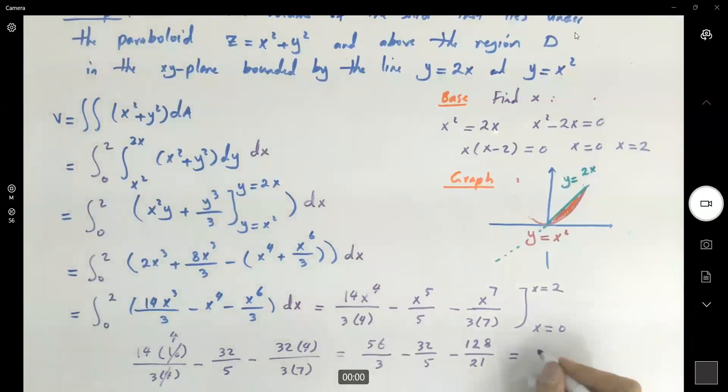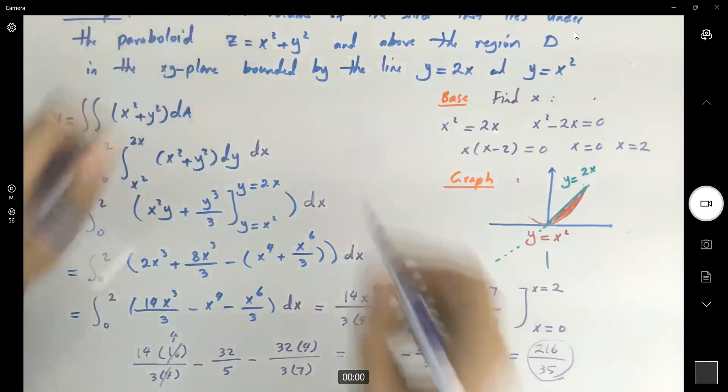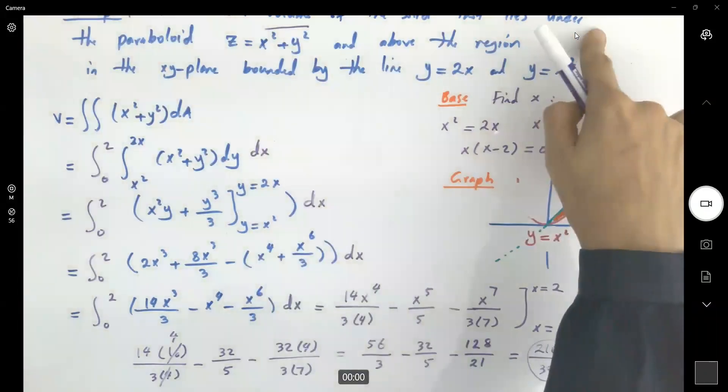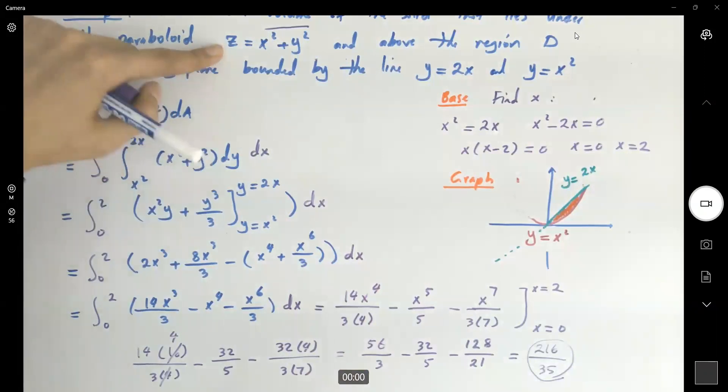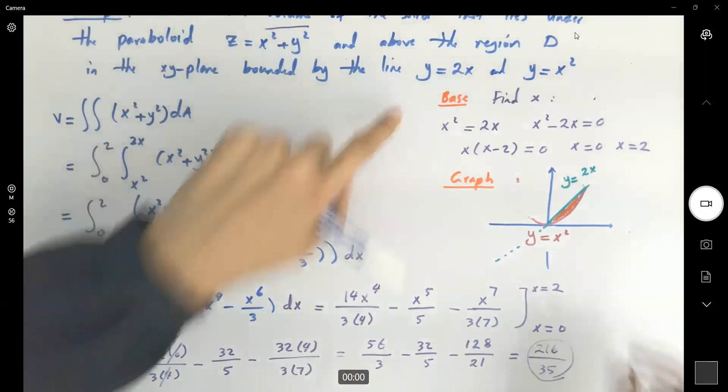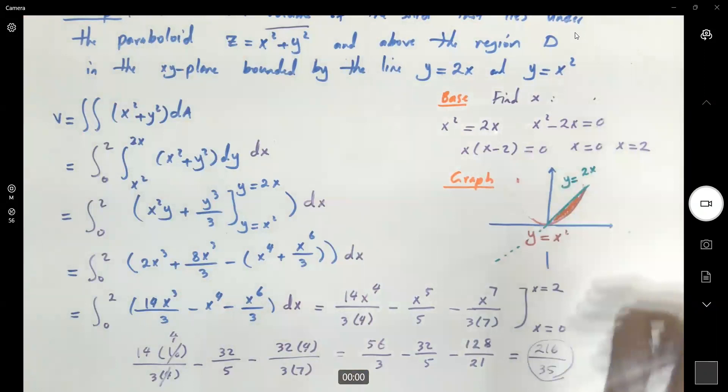Okay, after simplification and trusting student's response, 216 divided by 35 is the volume of the solid that is bounded under the paraboloid x squared plus y squared and above this region.